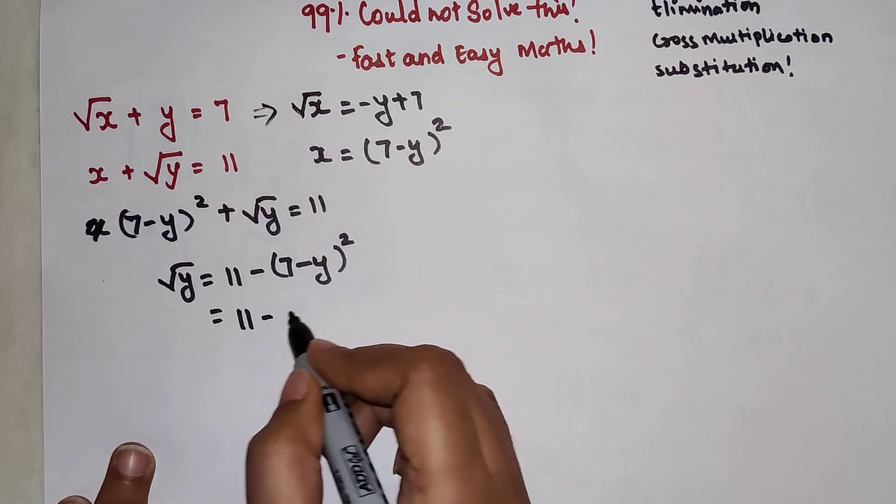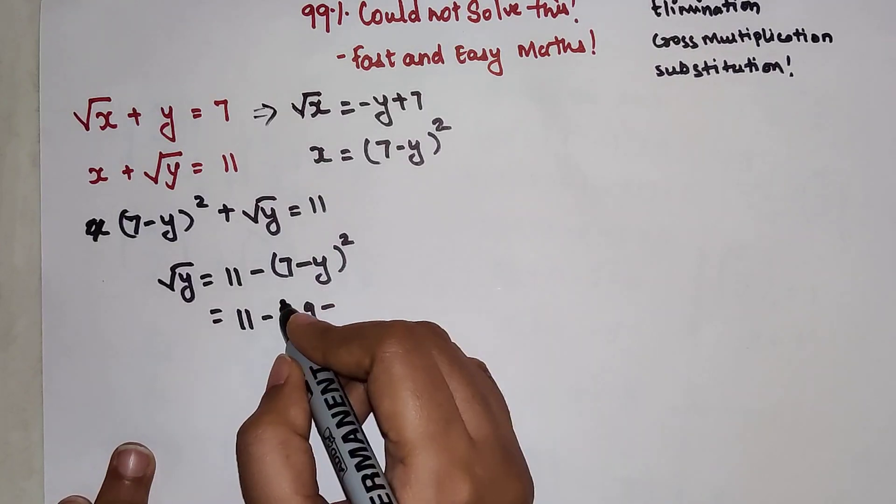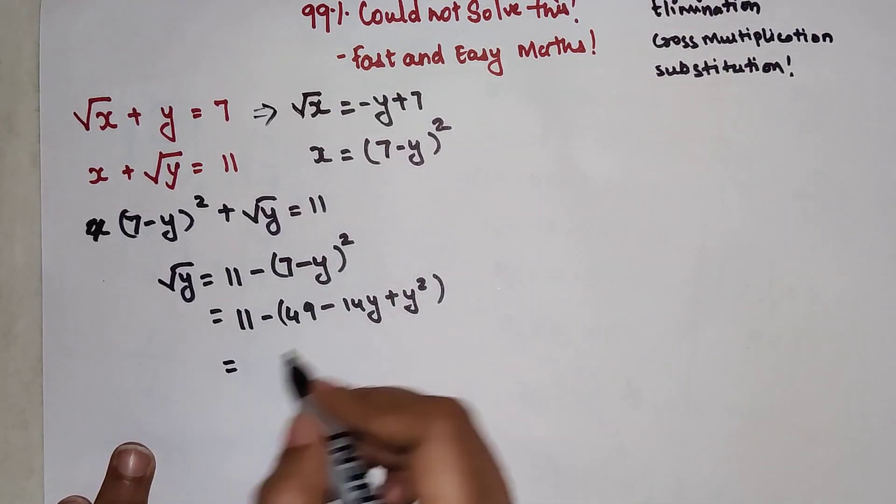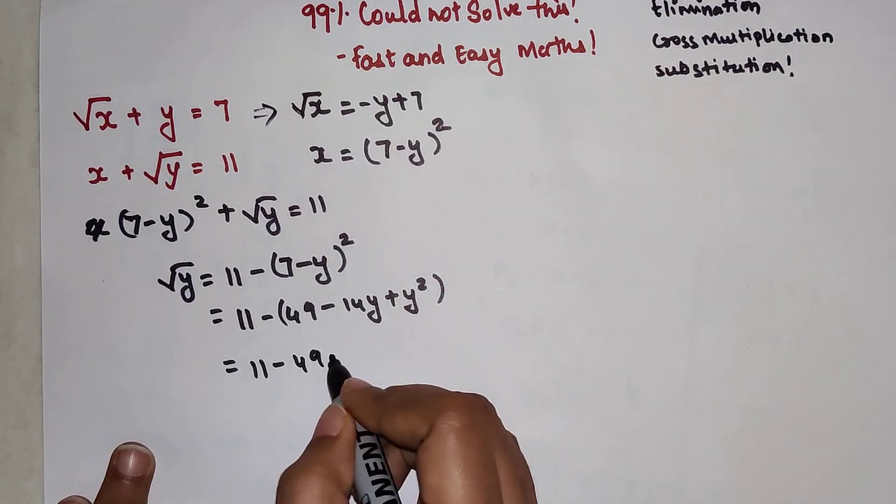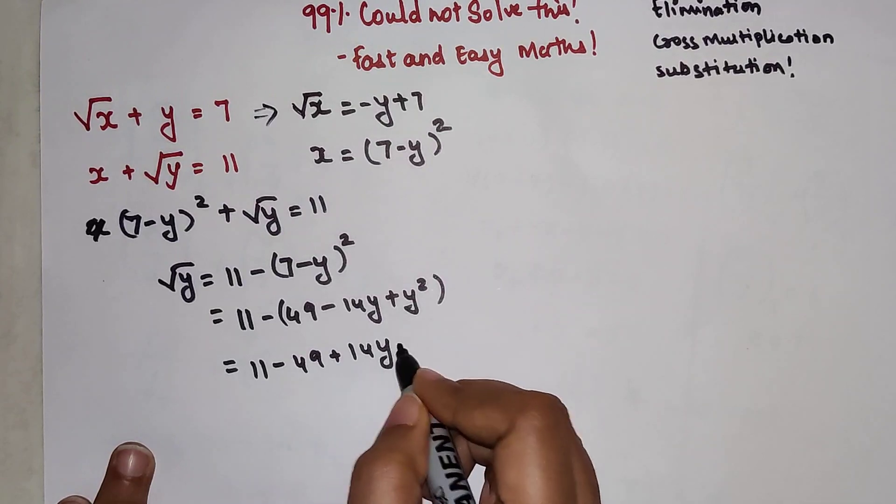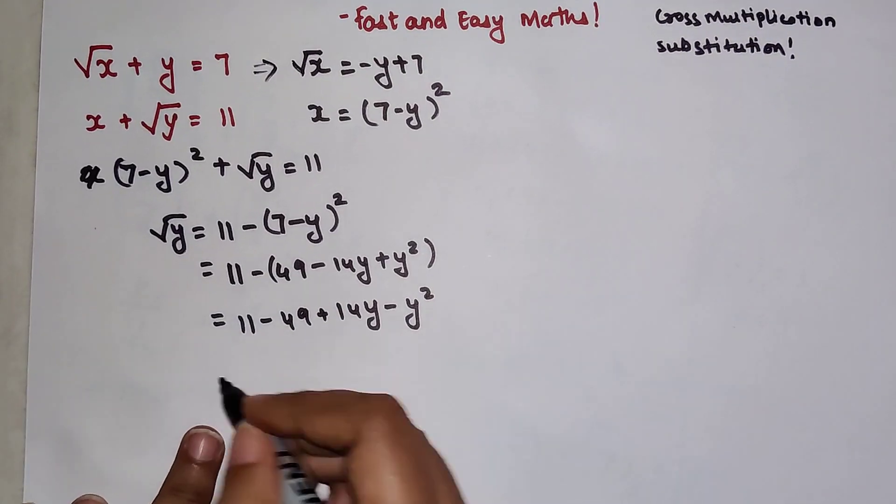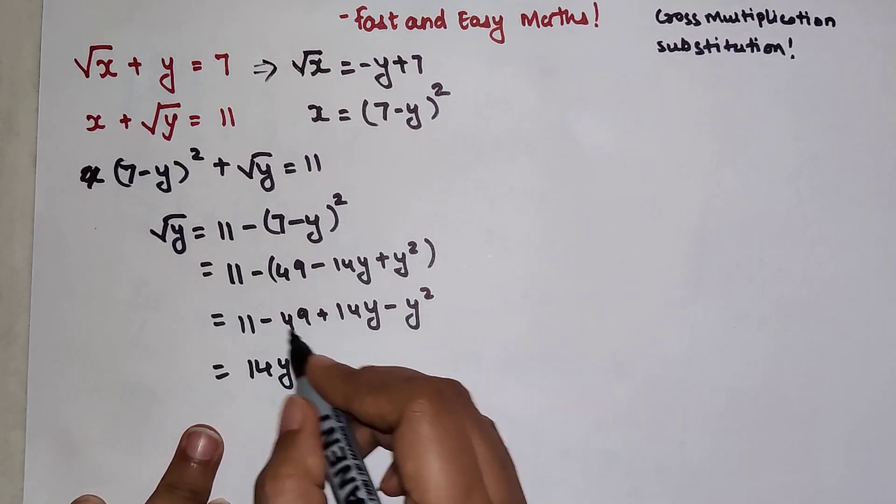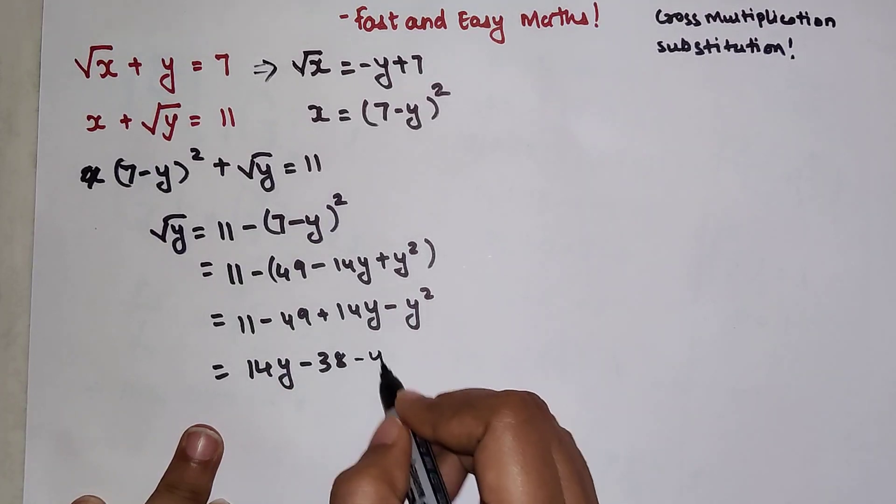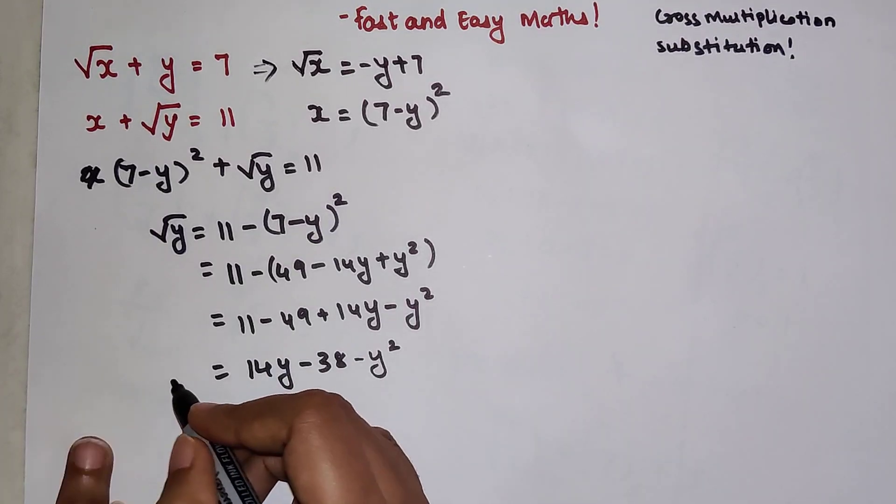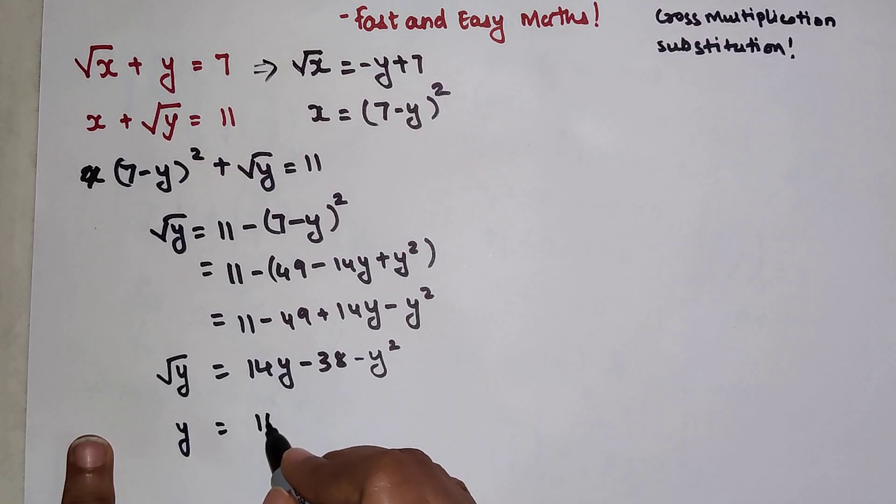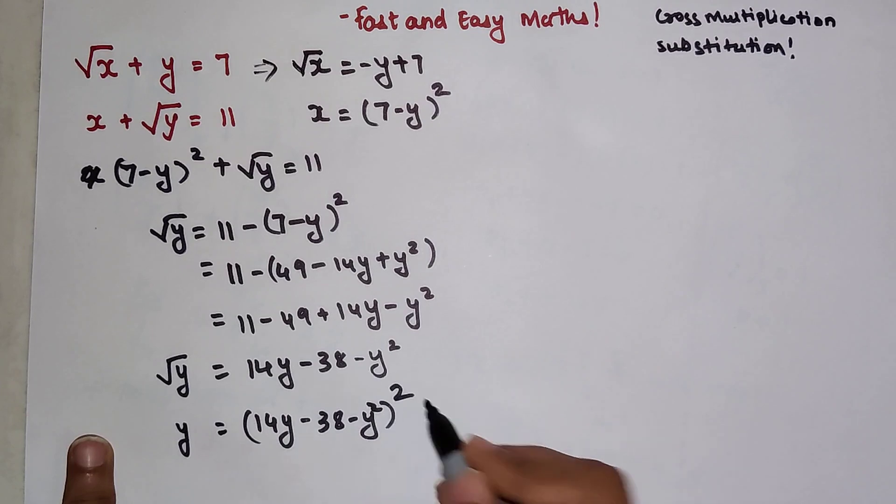I will shift everything to keep root y on one side. Root y equals 11 minus 7 minus y the whole square. Let's expand this: 11 minus 49 minus 14y plus y square. This becomes 14y minus 38 minus y square equals root y.